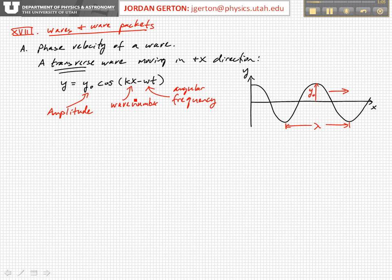So k is the wave number, which is just 2 pi over lambda.